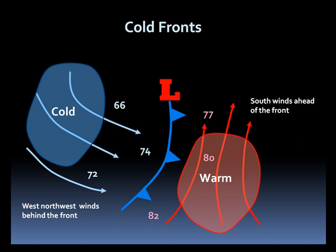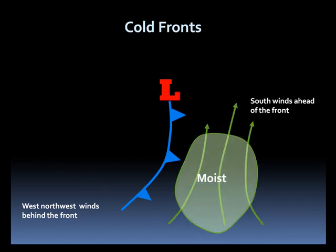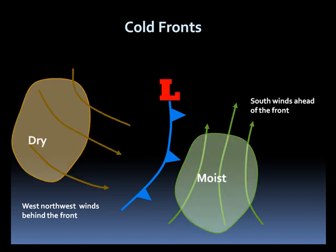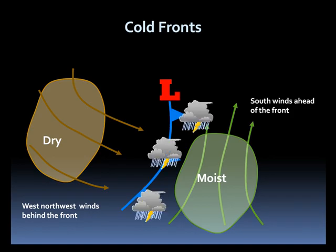With the warm air comes more moisture, while the colder air ushers in drier conditions. Factoring all these together, the atmosphere is ripe for shower and potentially thunderstorm development, or of course, snow if it's cold enough.